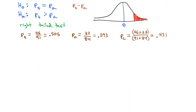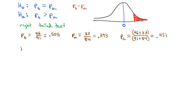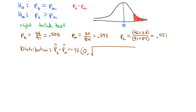We can use that information to find the distribution. The difference in proportions between teens and adults is normally distributed with a mean of 0 and a standard error equal to the square root of: 0.451 times (1 minus 0.451) times (1/91 plus 1/84). Plugging that into the calculator gives a standard error of 0.0752.